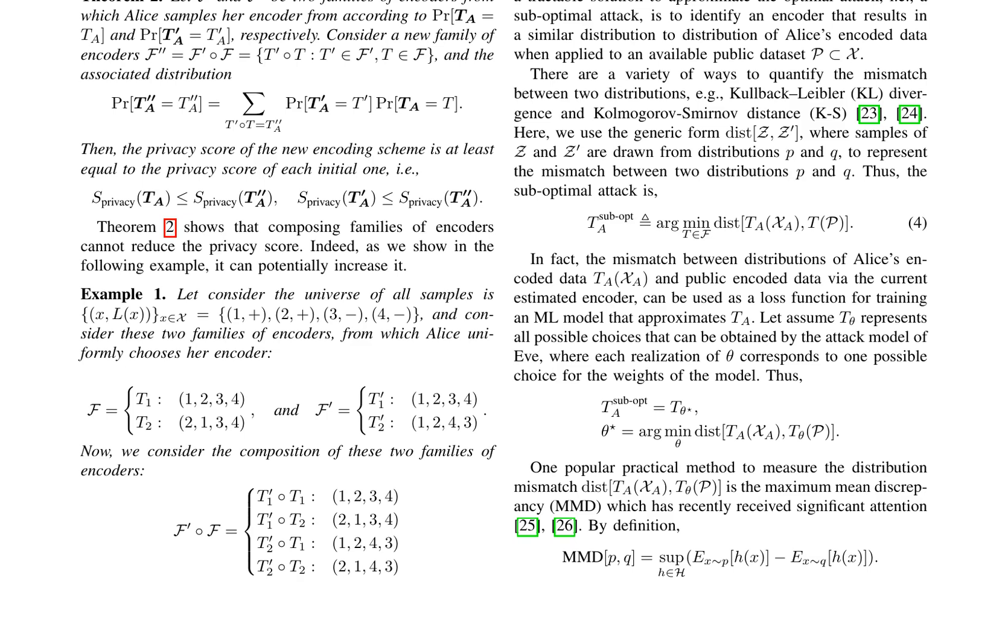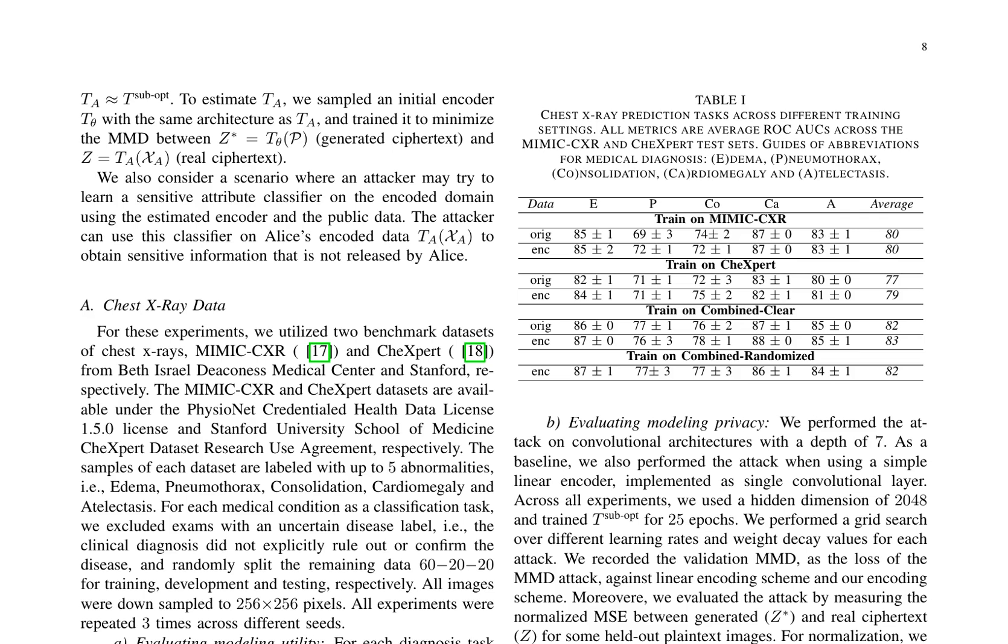The authors evaluate the impact of their randomized encoding scheme on downstream modeling performance using chest X-ray datasets. They compare models trained on encoded data to standard architectures trained on raw data and report the average AUC across different diagnosis tasks.